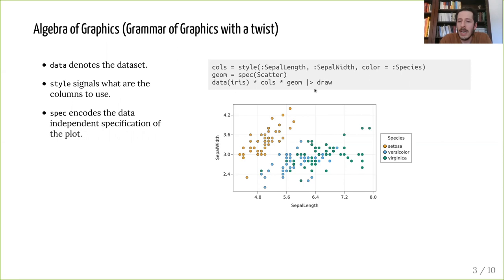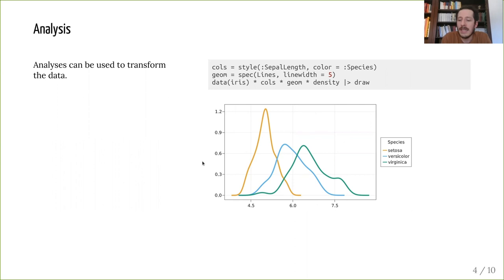The final ingredient that I'm going to use is an analysis. Sometimes I don't want to just plot the raw data, but I want to do some processing to the data first. And this can be made to fit nicely into the framework. Here to make a density plot, for example, I would proceed as before,